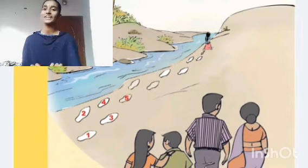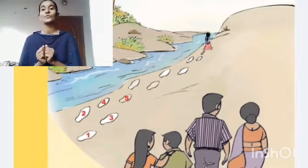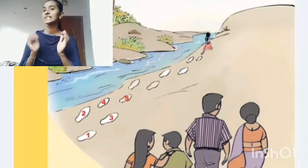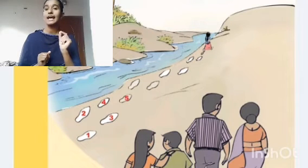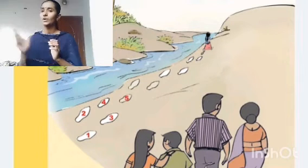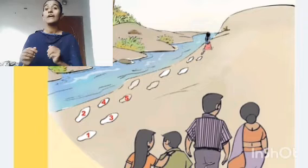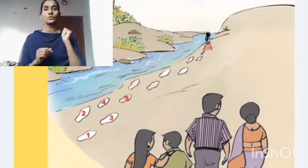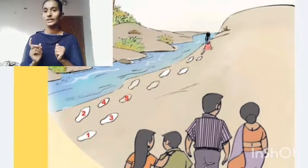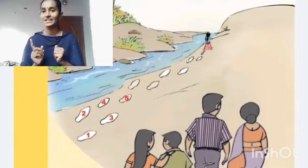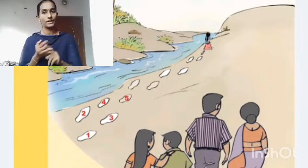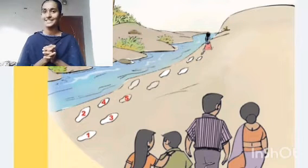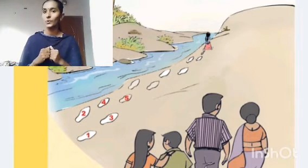Good morning, dear students! In this new class we are starting our new chapter, Unit Number Seven: Let's Add and Subtract. Look at this picture — a family is going somewhere. Can you see it? Who are they? Maybe a father, a mother, and their children. Let's look at where they are going.